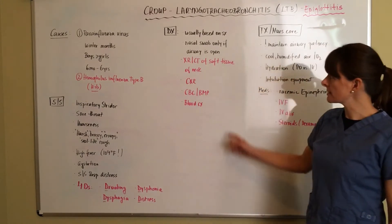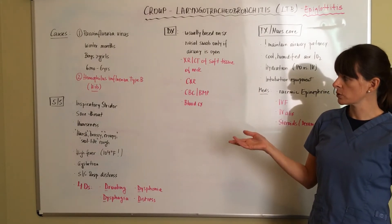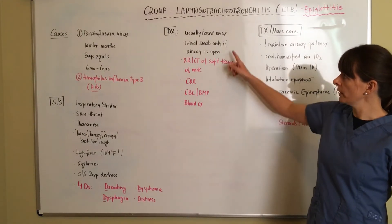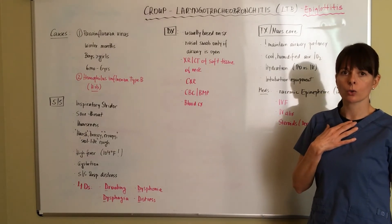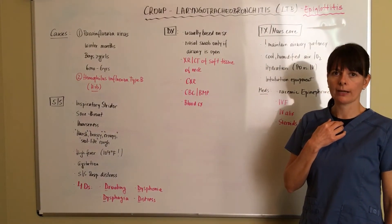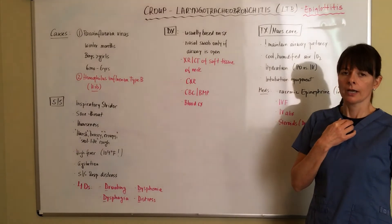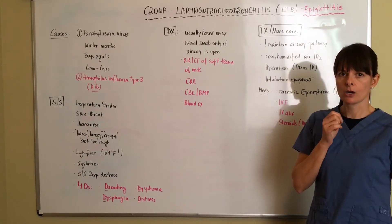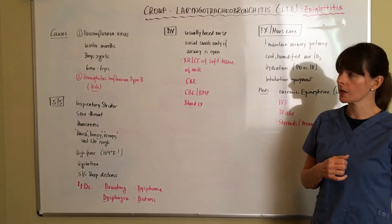For diagnostics, croup is usually diagnosed based on symptoms — the inspiratory stridor, sore throat, and the typical cough. A nasal swab is only performed if the airway is open. We don't want to put anything in the patient's nose or mouth or inspect the posterior pharynx if we think there's inflammation, because children aren't always cooperative and even a slight touch can cause increased swelling and completely occlude the airway.